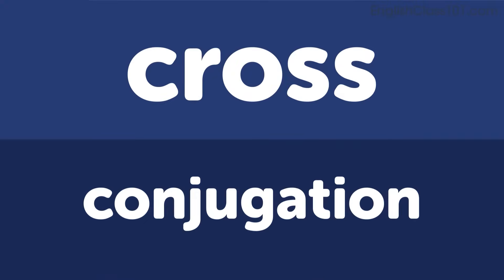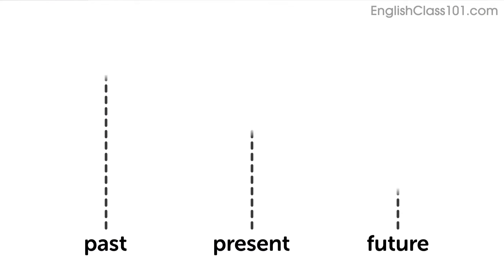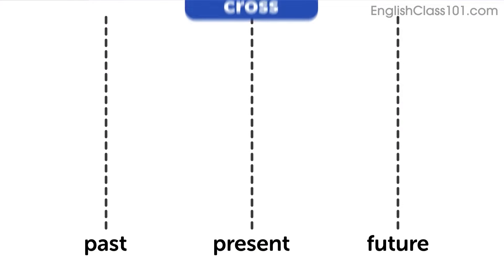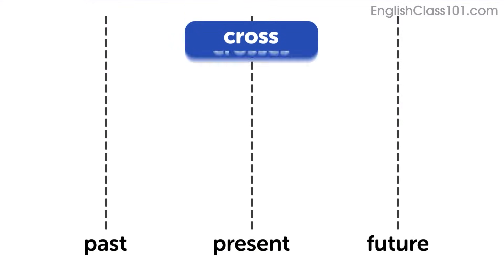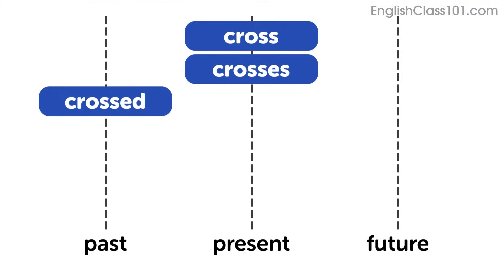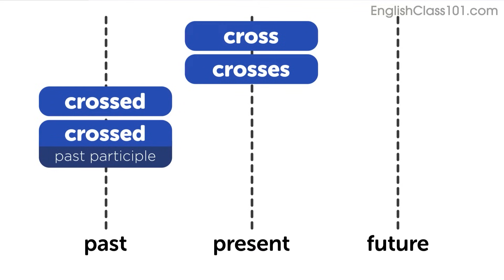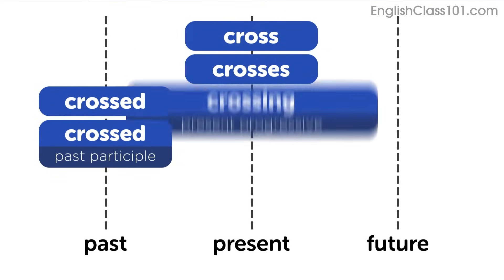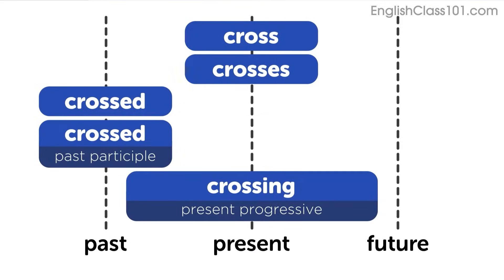Now let's look at the conjugations for this verb. Present: cross, crosses. Past: crossed. Past participle: crossed. Progressive: crossing.